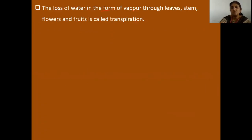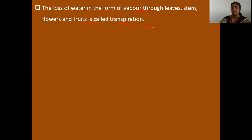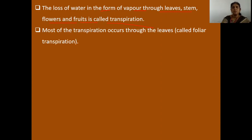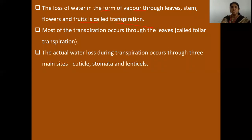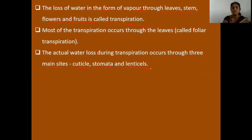Transpiration is the loss of water in the form of vapor through leaves, stems, flowers, and fruits. Most transpiration occurs through the leaves, called foliar transpiration. It occurs through three main sites: cuticles, stomata, and lenticels. Accordingly, three types exist: cuticular transpiration, stomatal transpiration, and lenticular transpiration. Details will be covered in the next lecture.